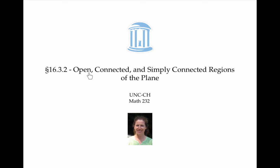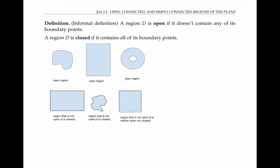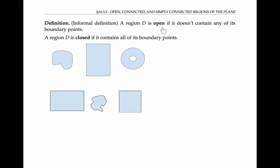This video defines open, connected, and simply connected regions of the plane. Informally, a region D is called open if it doesn't contain any of its boundary points. A region D is closed if it contains all of its boundary points.